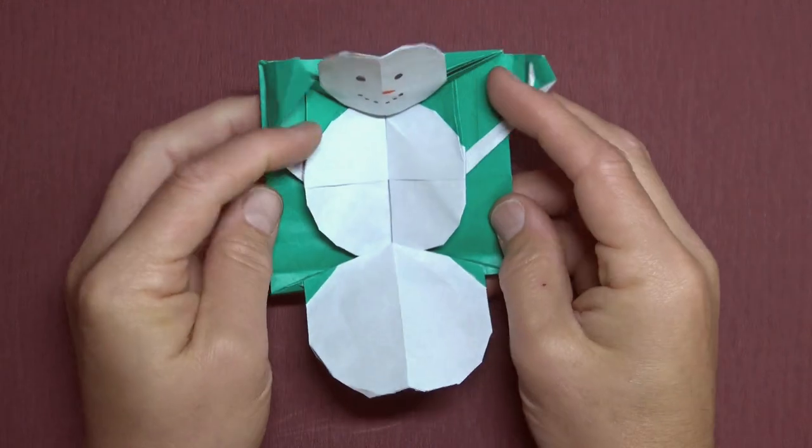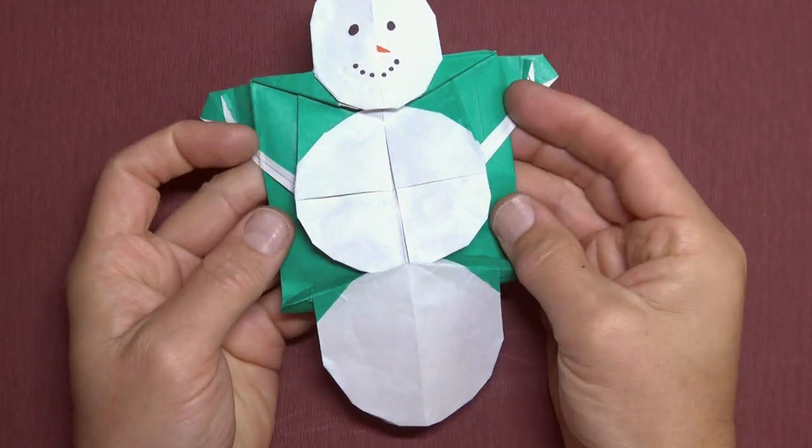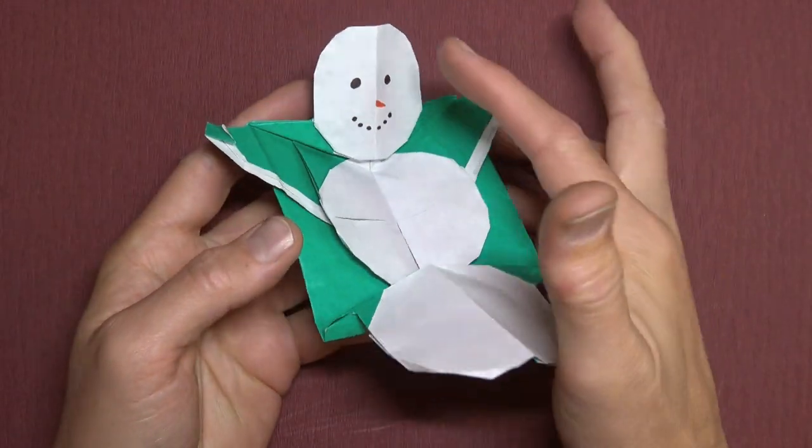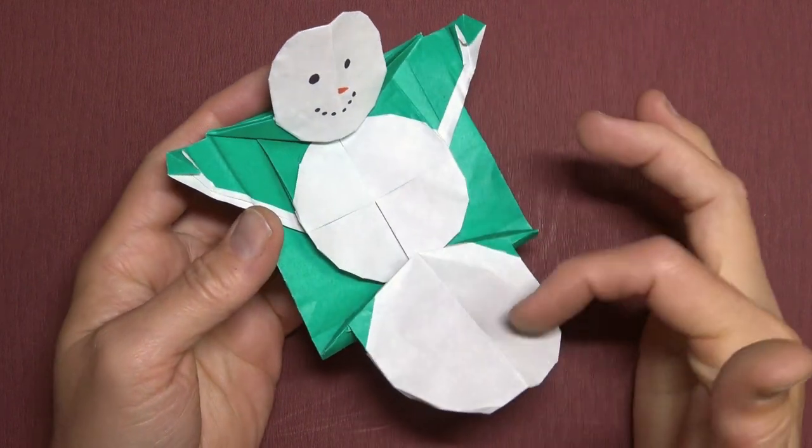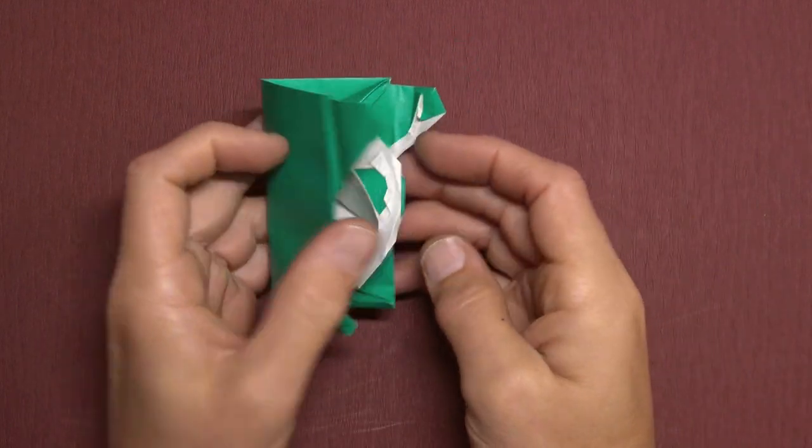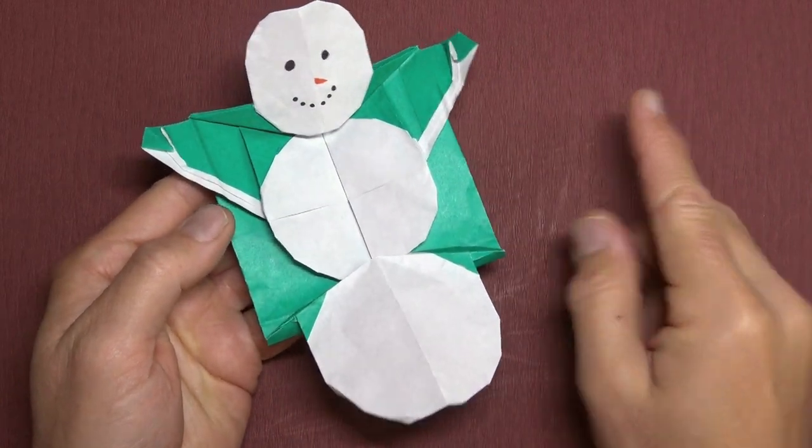And special, just for my members, I have a separate addendum tutorial where I reveal my secret method for making the three snowballs nice and round. And for membership, there's the link.